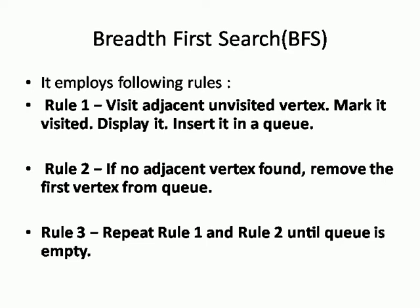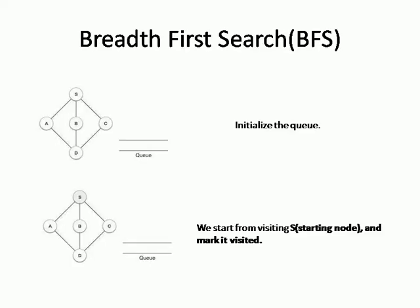These are the three steps used in breadth first traversal on a given graph. In this slide we have an example: a graph consisting of source vertex s, connected to three neighboring vertices a, b, and c. They are in turn connected to a vertex d. We initialize the queue to be empty, and the graph is represented by vertices s, a, b, c, and d.